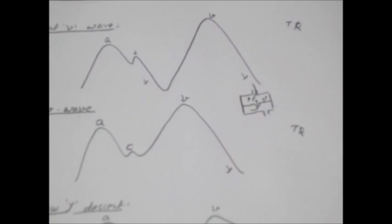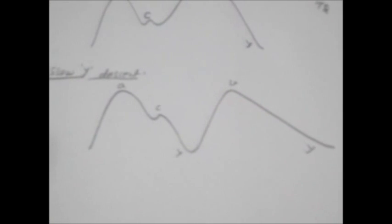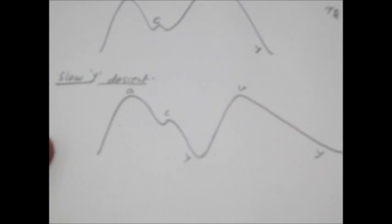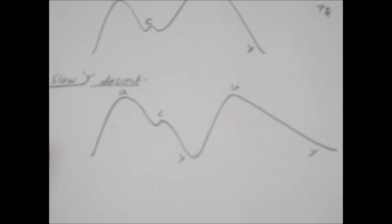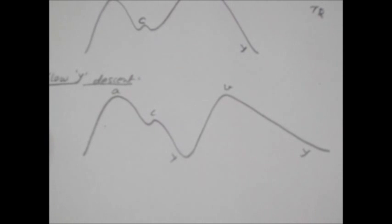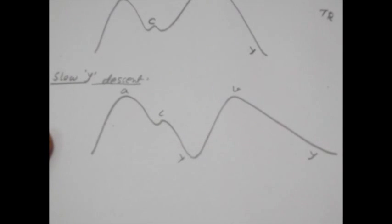And now we can talk about slow Y descent. Slow Y descent is seen in tricuspid stenosis. Now we know why Y descent is seen. Y descent is seen during the phase of ventricular filling.